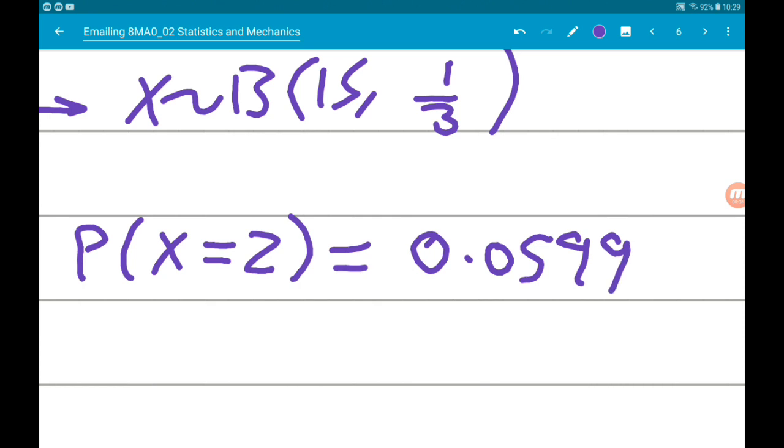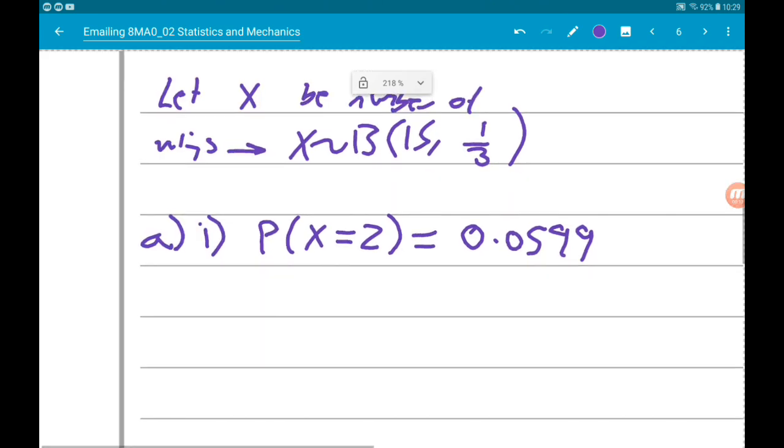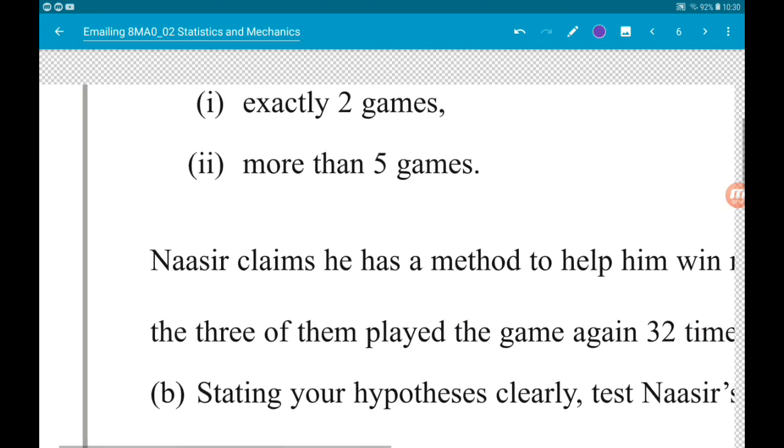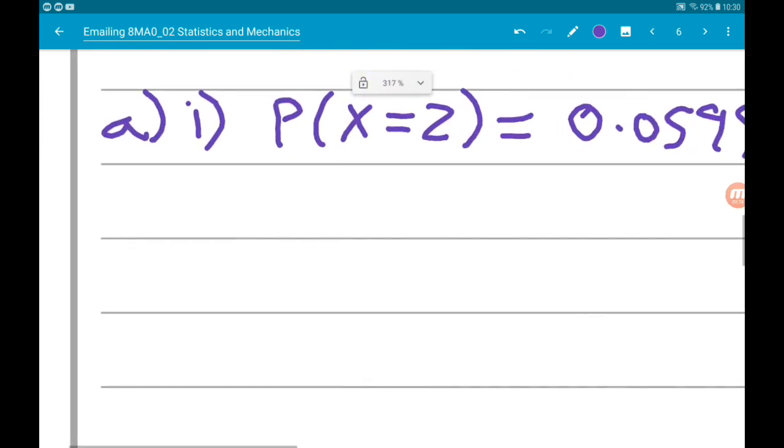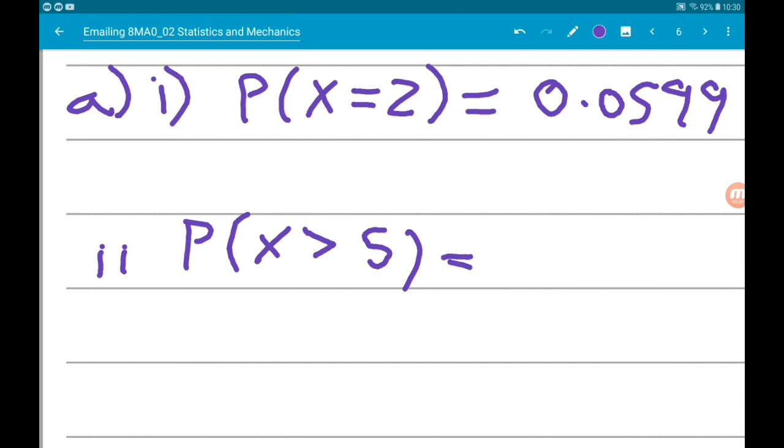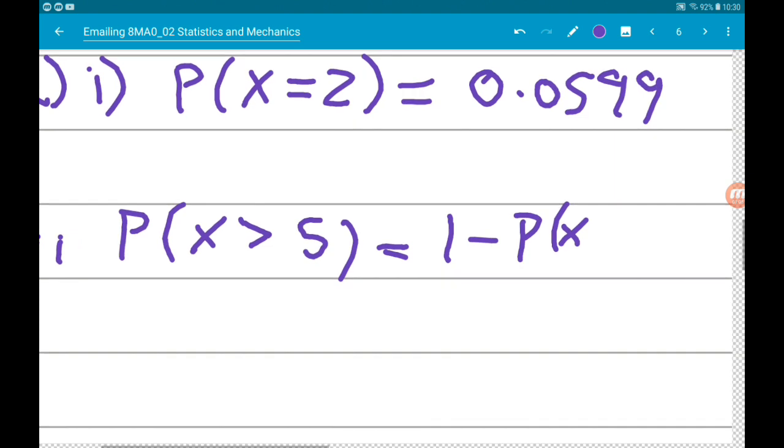Part two wants the probability that he wins more than five games. So we want the probability that x is greater than five. Our calculators can do this. This time we want cd. They always work out the probability that x is less than or equal to a number, so if we want x greater than five, we need to do one minus the probability that x is less than or equal to five.